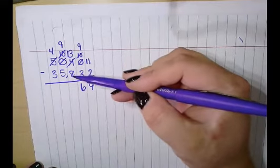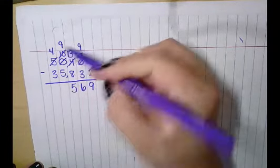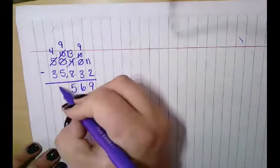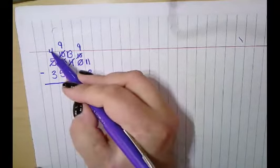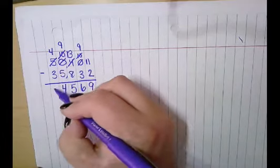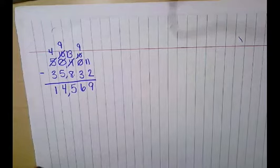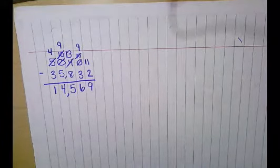13 subtract 8 is 5. 9 subtract 5 is 4. 4 subtract 3 is 1. So my answer is 14,569. That's how I solve with regrouping.